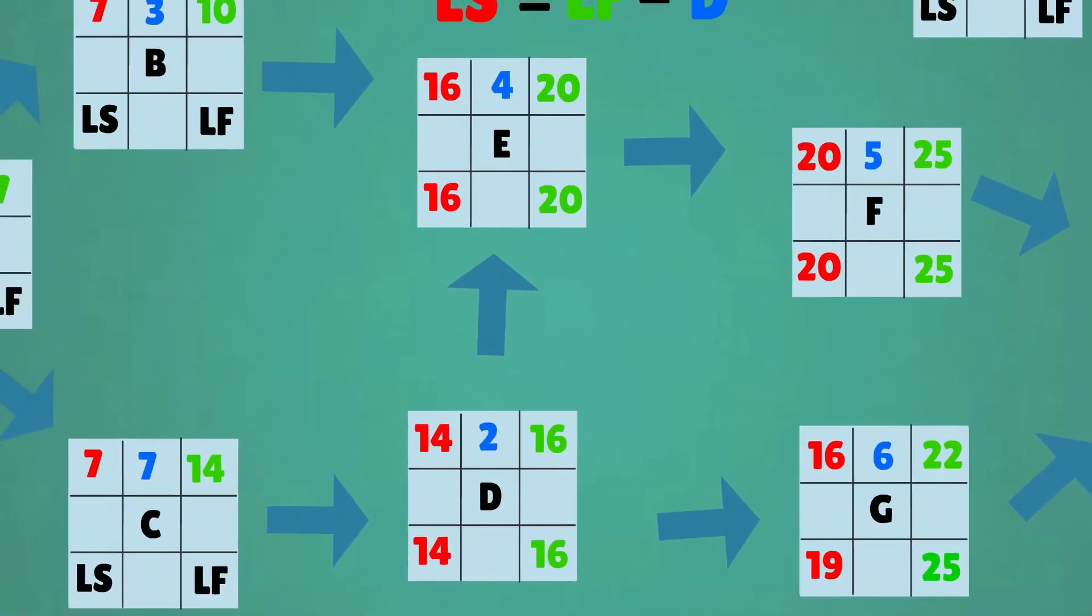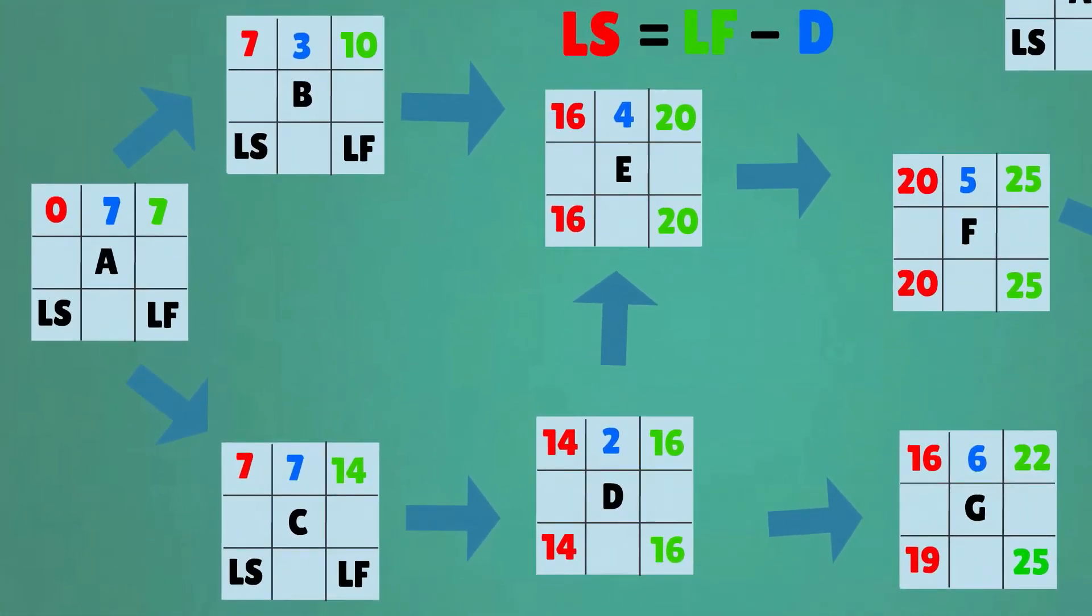The same goes for activity A. As activity B has a late start of week 13 and activity C a late start of week 7, so activity A should have a late finish also of week 7.